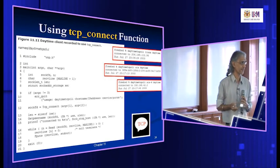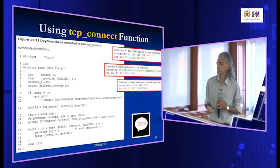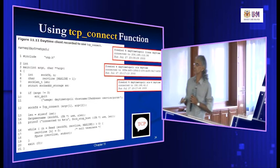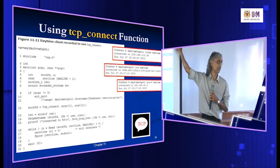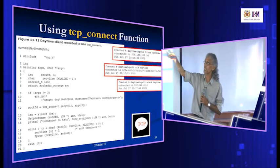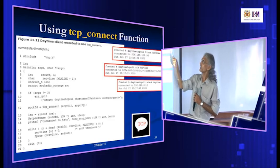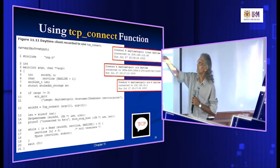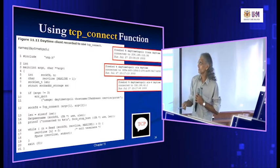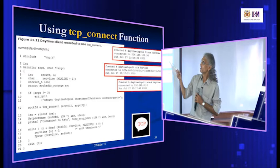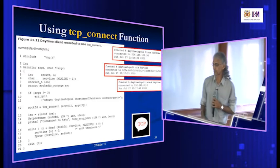The daytime client expects the server to send the current date and time. So after connecting, it just reads from the socket and once it gets the value, it displays the data coming from the socket onto the standard output — the terminal. The daytime client code becomes very simple to use and very clear because most details are hidden inside the one big function.